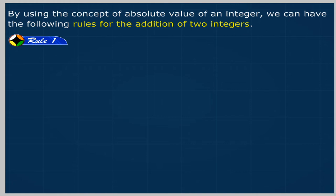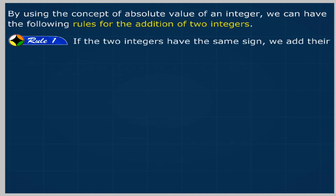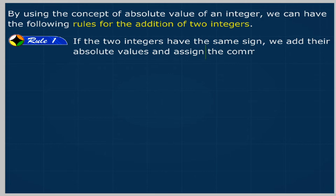Rule 1: If the two integers have the same sign, we add their absolute values and assign the common sign to the sum obtained. For example,